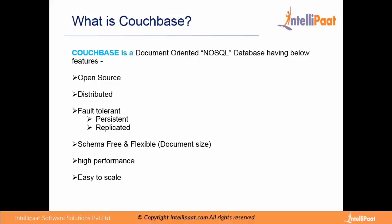It is persistent, meaning it stores data in memory as well as on disk. Replicated means we have multiple copies of our data. It is schema free and flexible — we are no longer bound to a fixed number of columns; a document can have any number of fields. It provides high performance because Couchbase serves requests from memory itself, which makes it very fast. It is also easy to scale — we can simply add or remove machines from the cluster with a single click.